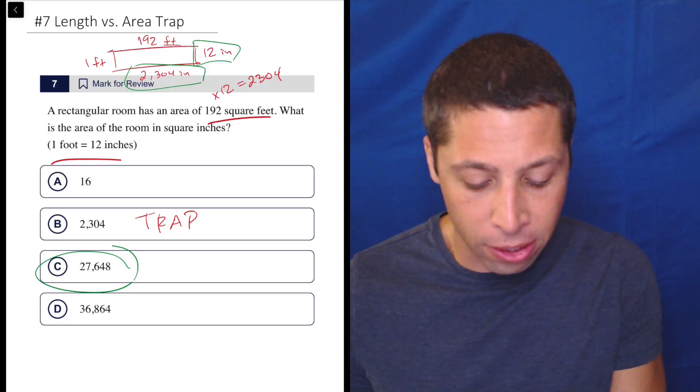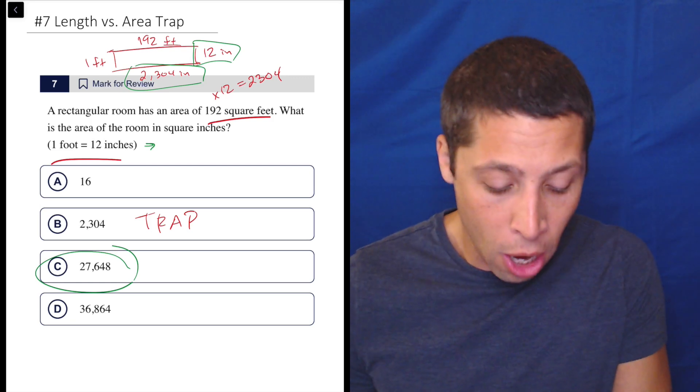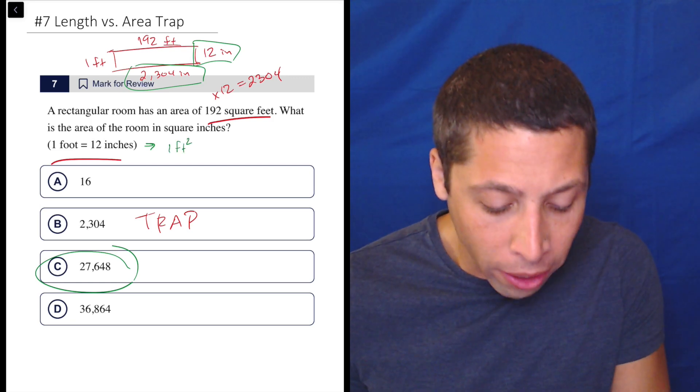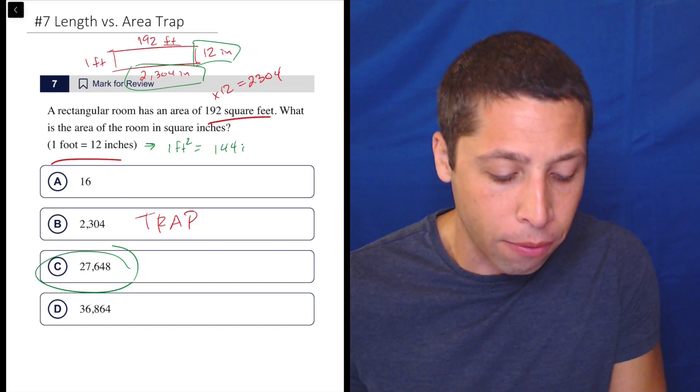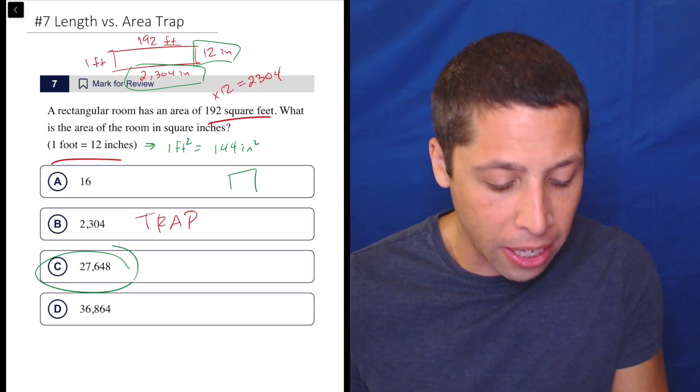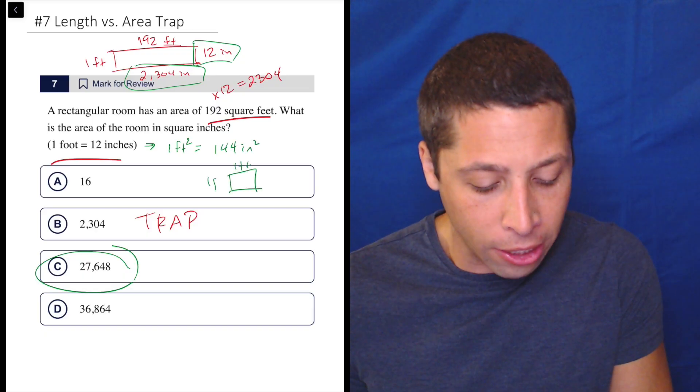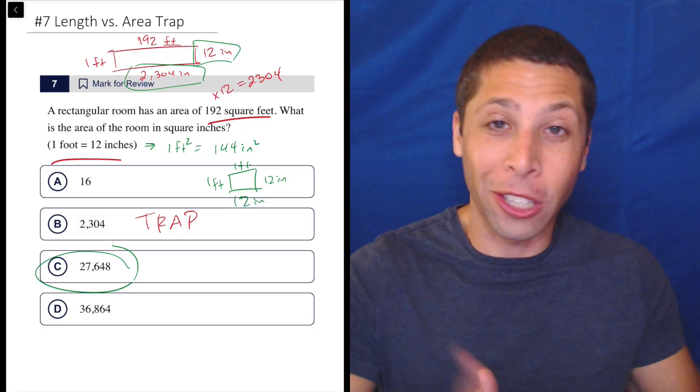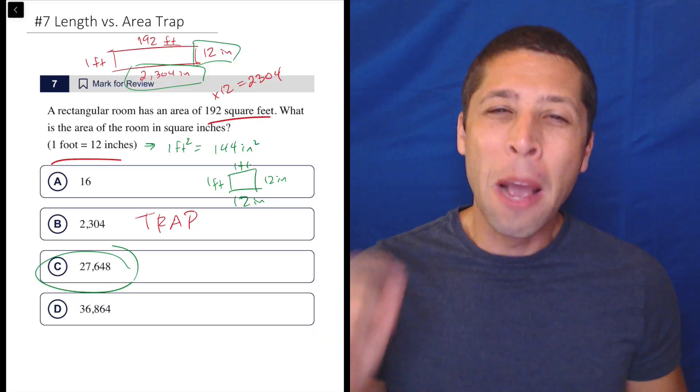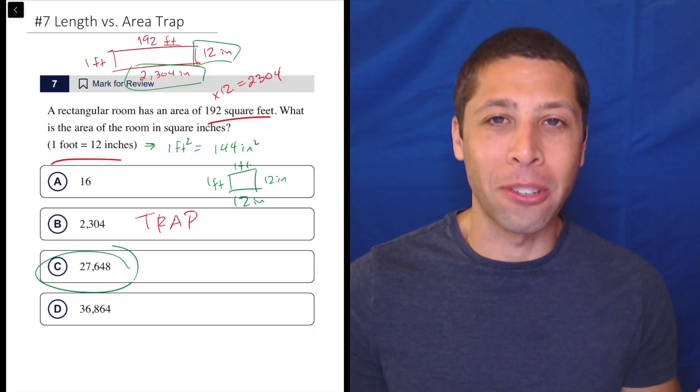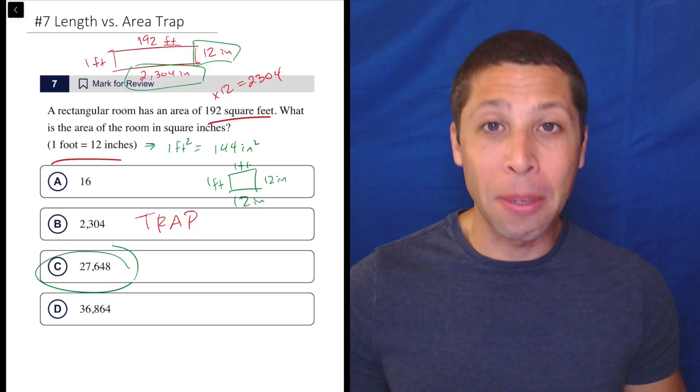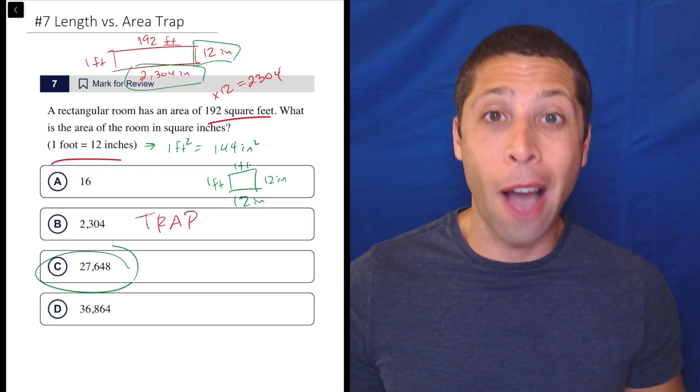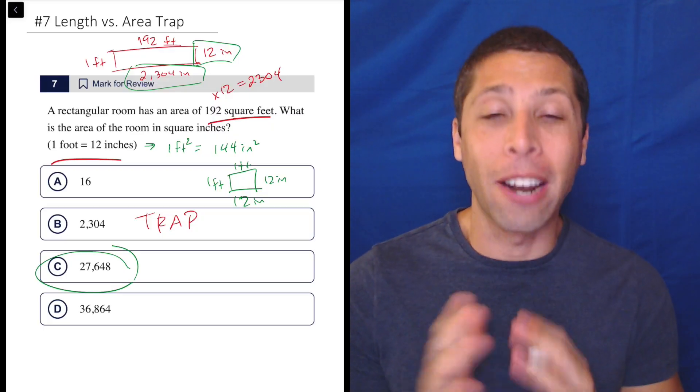Another way to have gotten this is to think that instead of having feet and inches, we could have that one square foot is equal to 144 square inches. Because just think about it, if it's one foot on each side, it's 12 inches on each side. So we have to convert the conversion in order to do this question. But you should sense that coming. You should sense that just multiplying two numbers like that is way too easy. There's got to be something else you can do. So drawing something out can actually help you see the trap coming and avoid it.